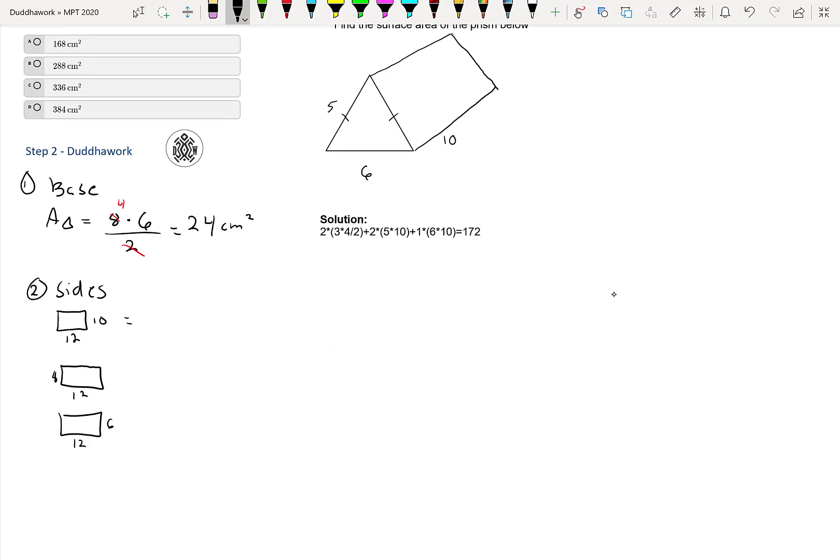So, their respective areas is just base times height. That's 12 times 10, which is 120. And then we have 8 times 12, which is 8 times 10, that's 80, 8 times 2, that's 96. And then we have 6 times 12. So, that's 6 times 10, that's 60, plus 2 times 6, so that's 72.